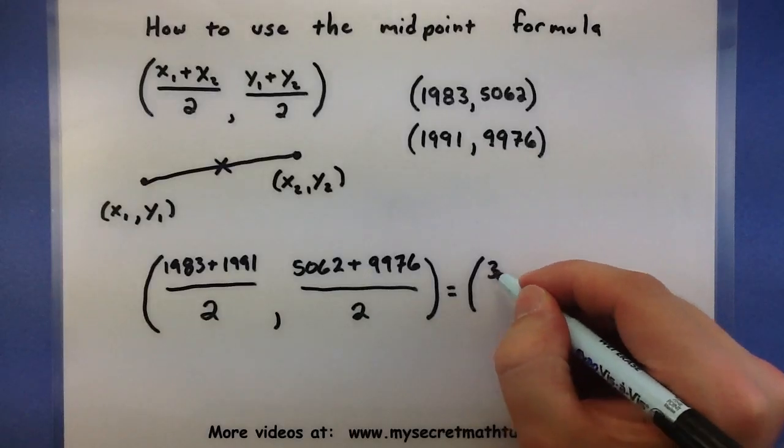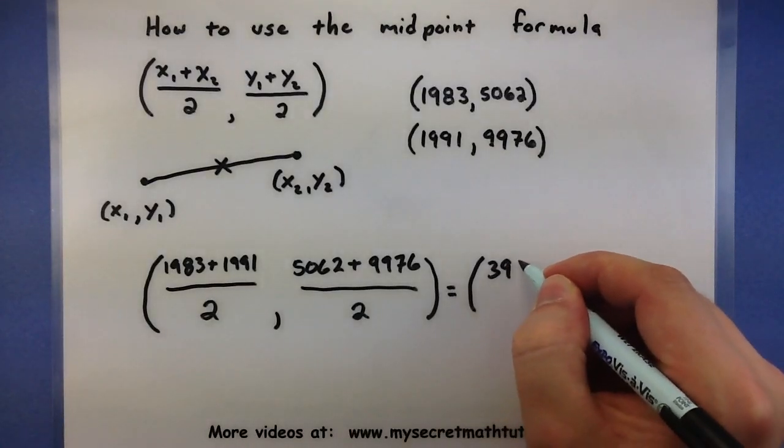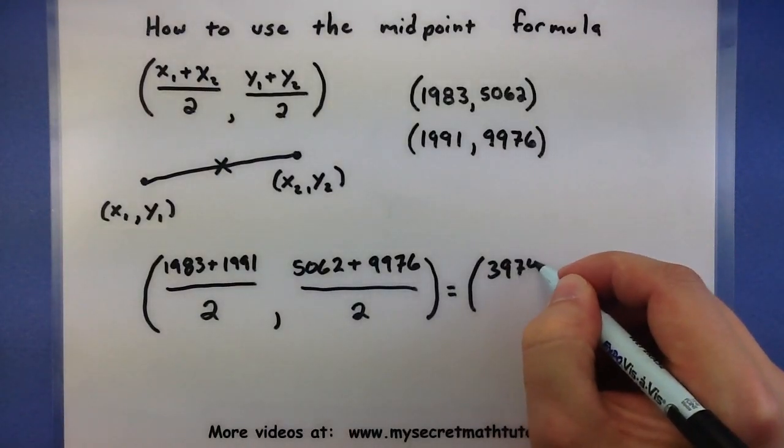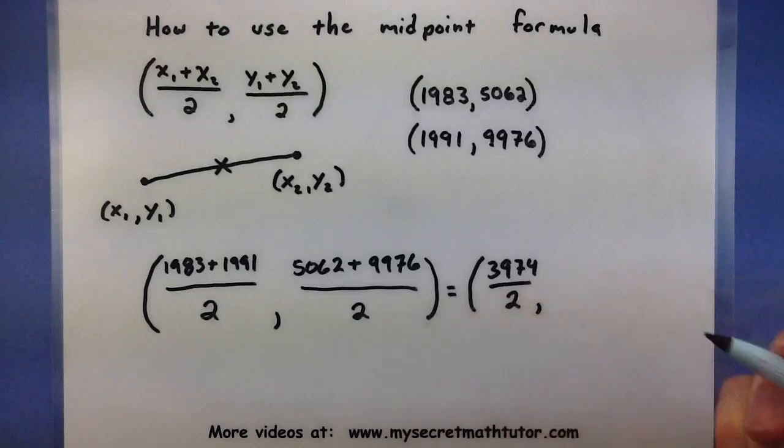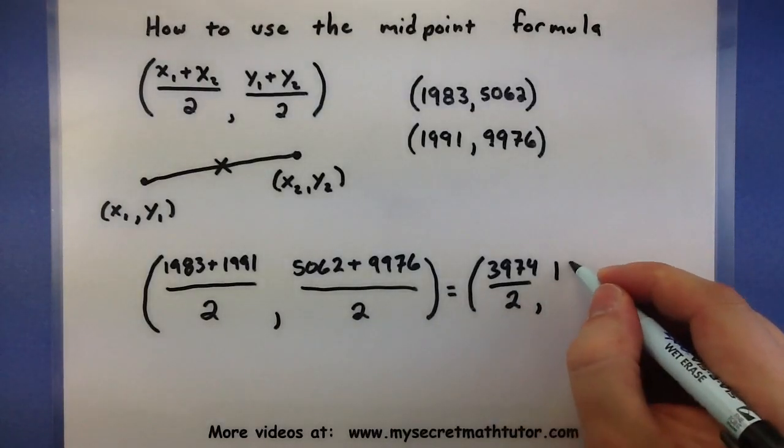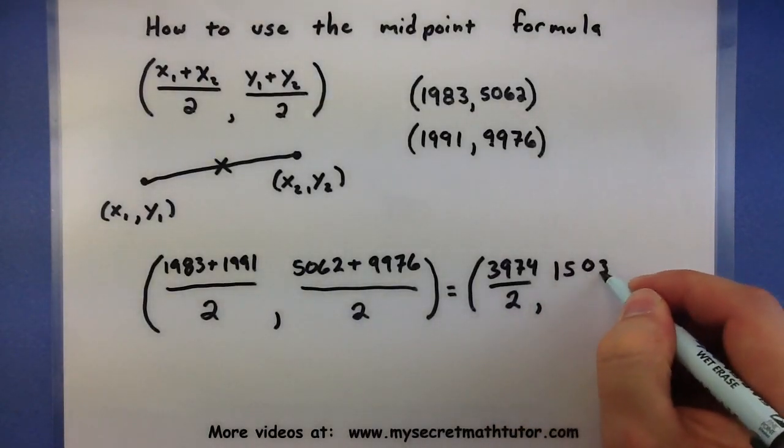Now, simplifying these, I get 3,974. So, we'll need to take that and divide it by 2. And 15,038.